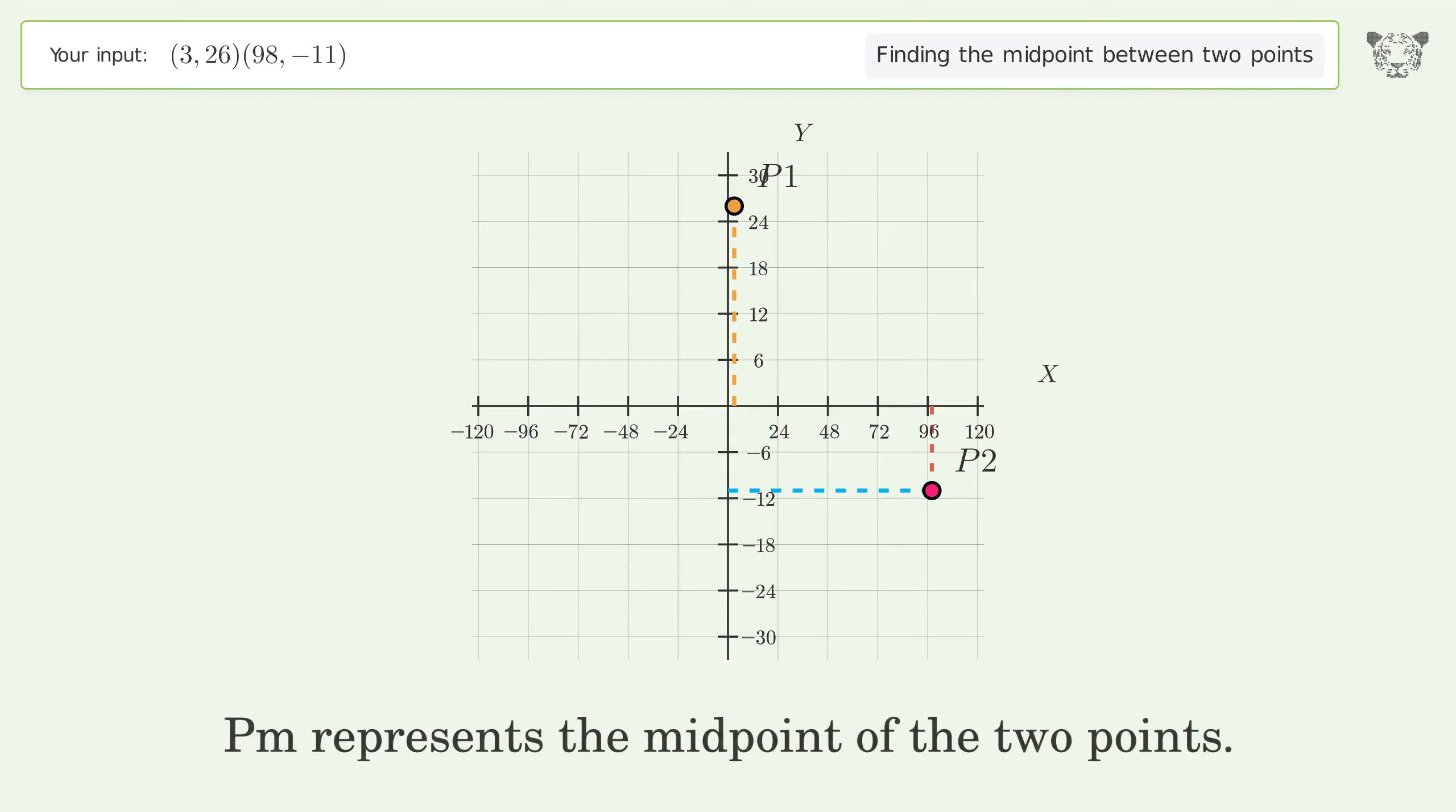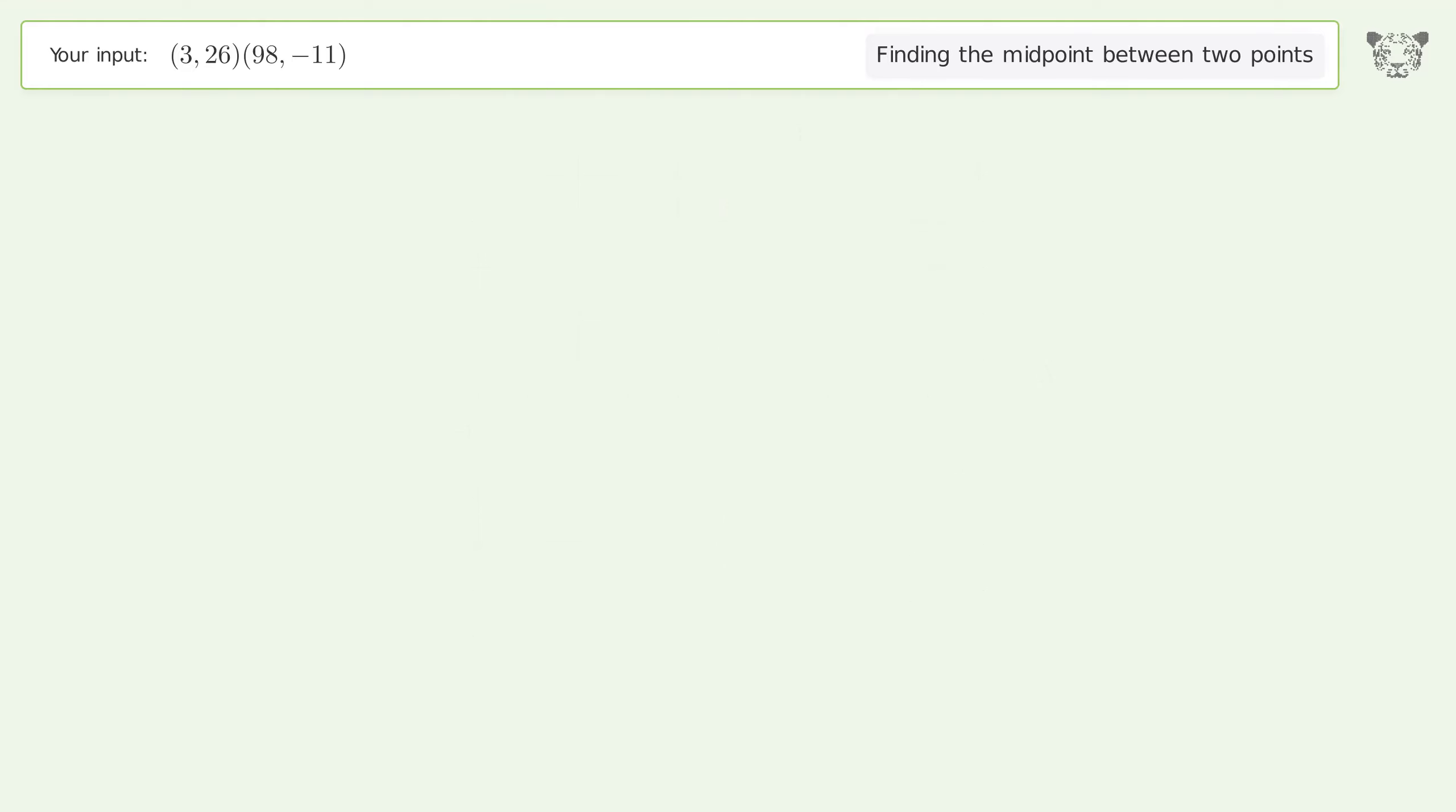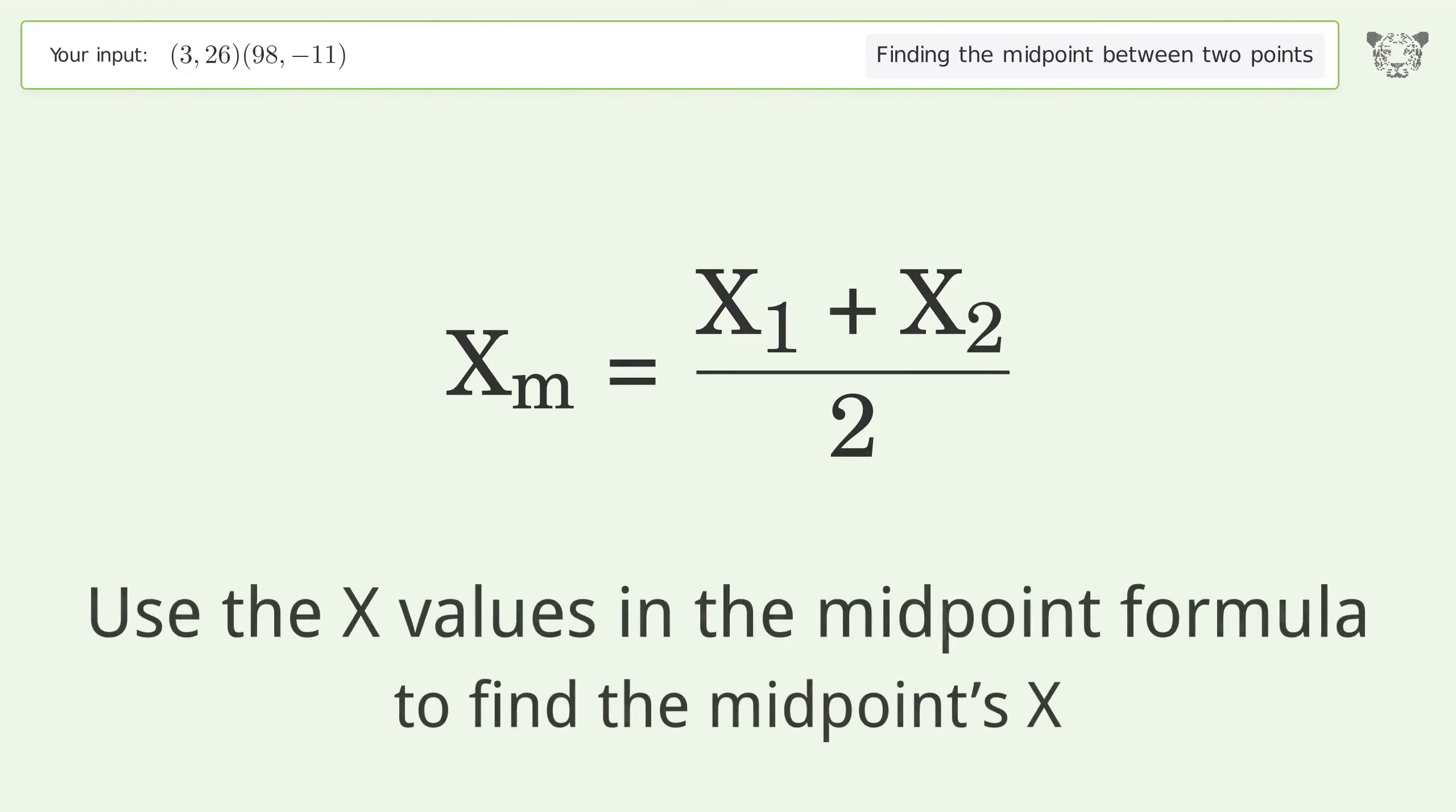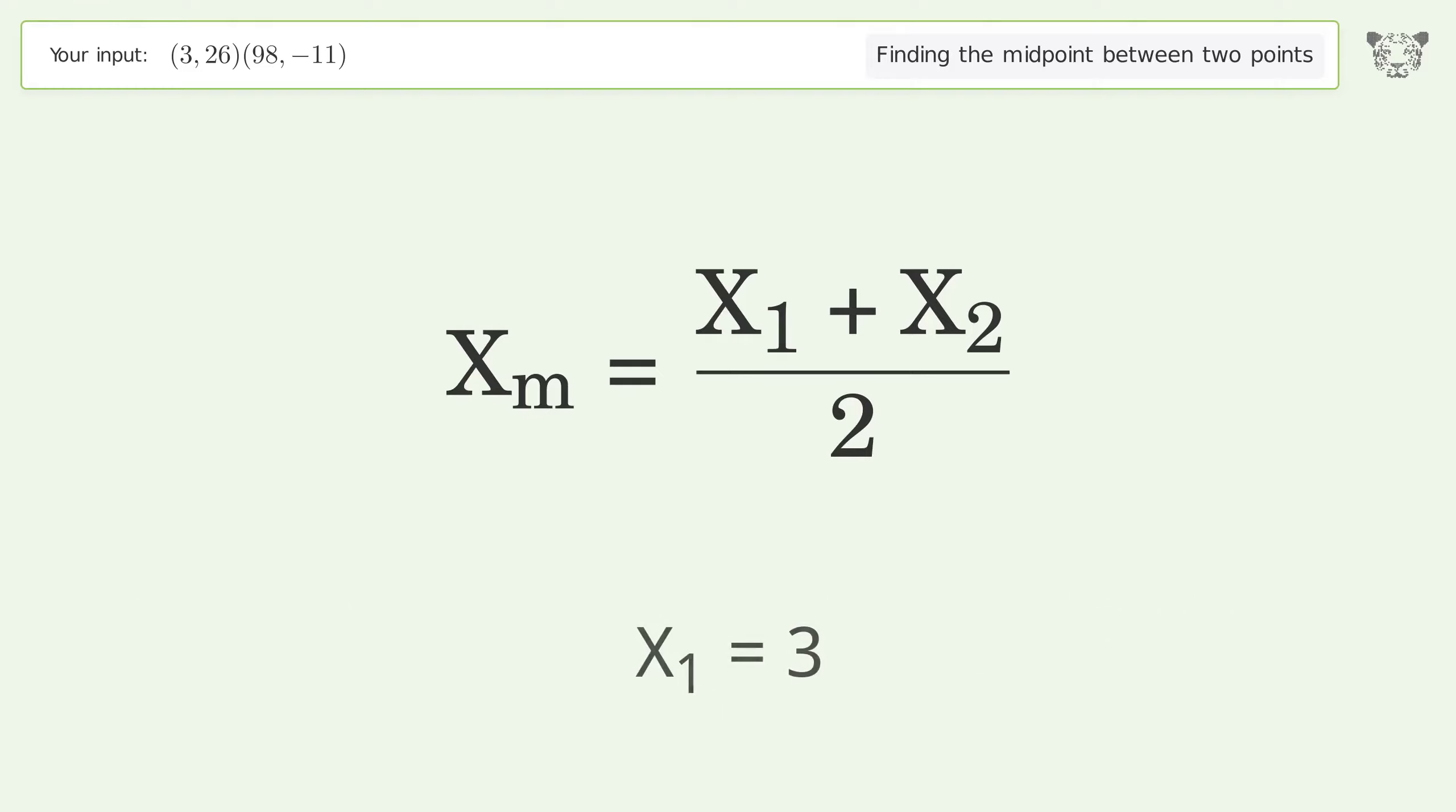Pm represents the midpoint of the two points. Use the x values in the midpoint formula to find the midpoint's x. x1 equals 3.